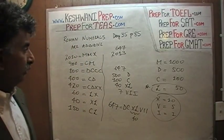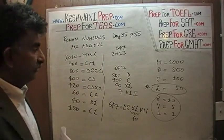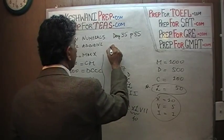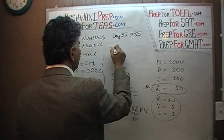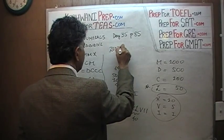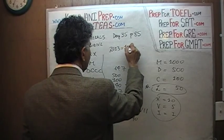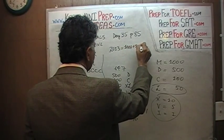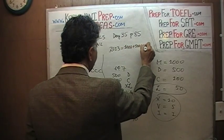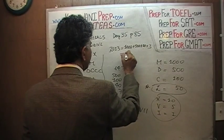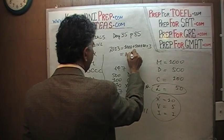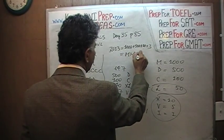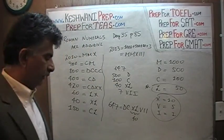Let's write 2013. 2013 is very easy — it's just 1,000 plus 1,000, plus 10, and 3. That gives us M, M, X, I, I, I. There you go: 2013.